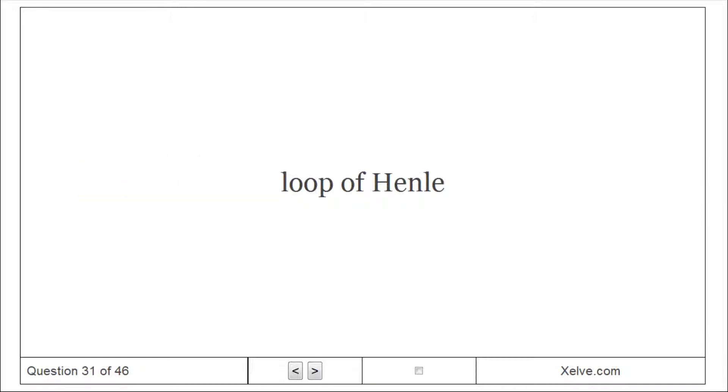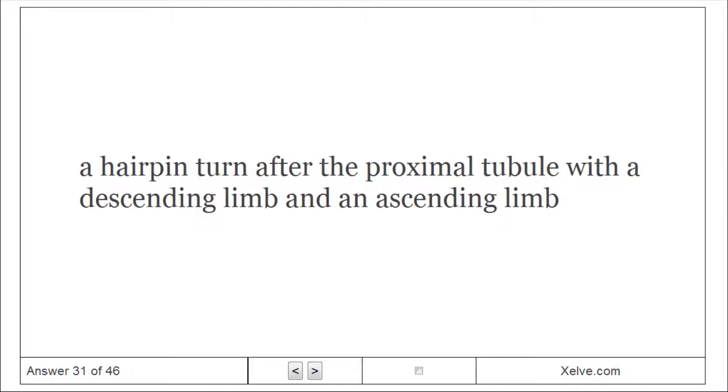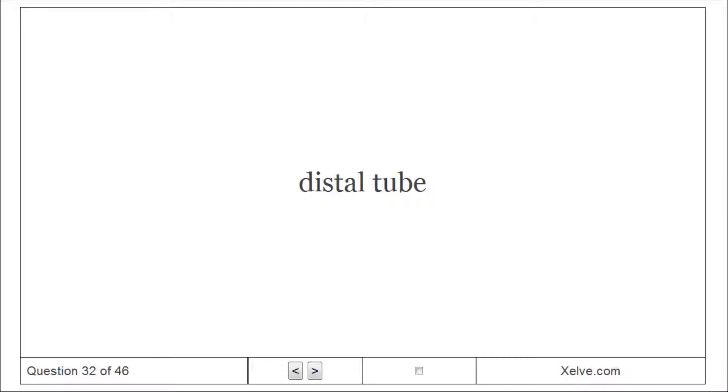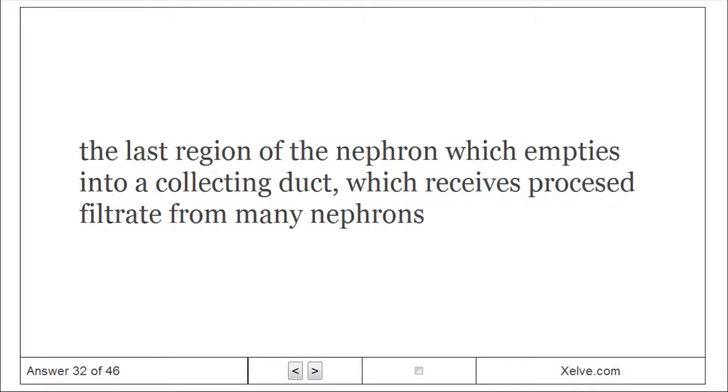Loop of Henle: A hairpin turn after the proximal tubule with a descending limb and an ascending limb. Distal tubule: The last region of the nephron which empties into a collecting duct which receives filtrate from many nephrons.